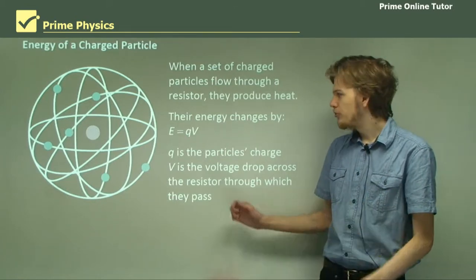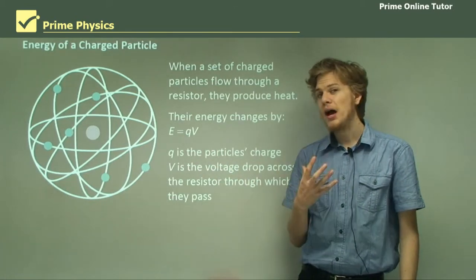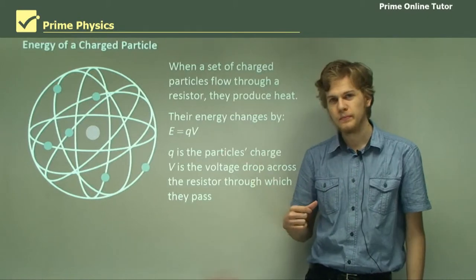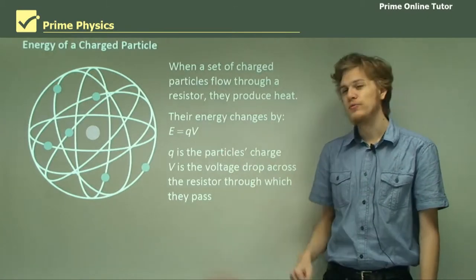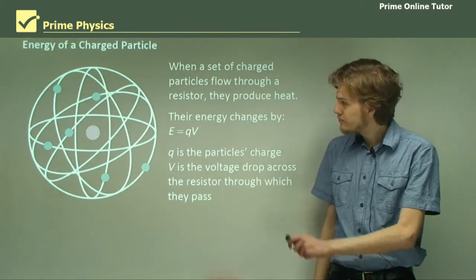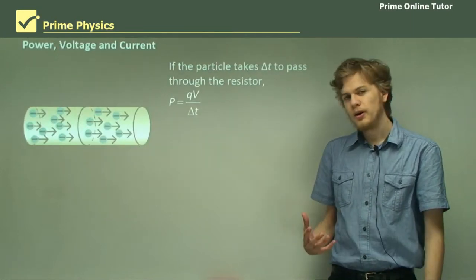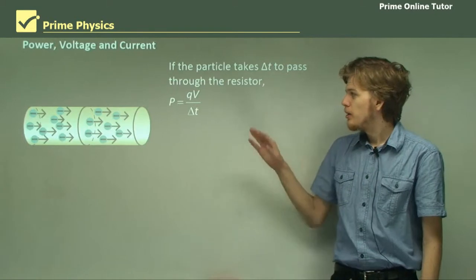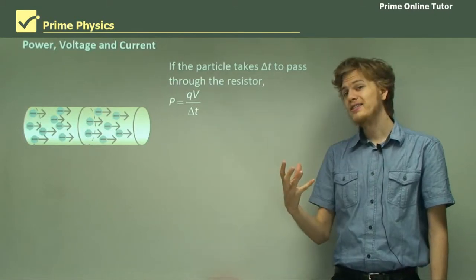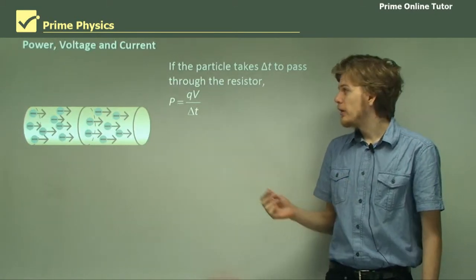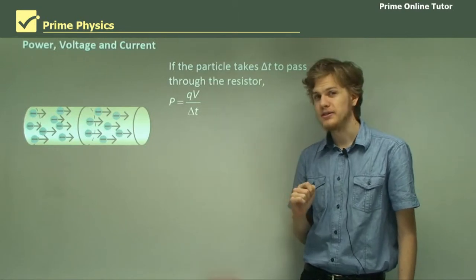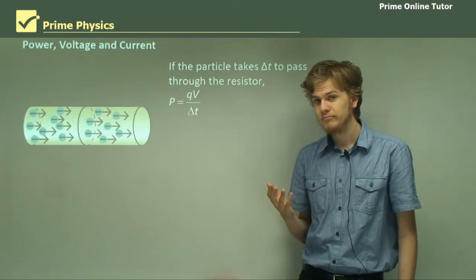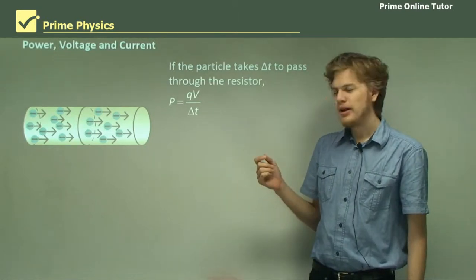Now, what if we wanted to try and figure out the power based on this equation? Well, power is energy over time. So if the particle takes a time of delta T to pass through the resistor, power, which equals energy over the change in time, will equal QV over the change in time.